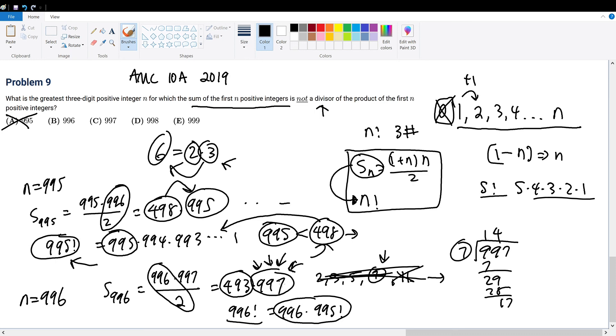So what does that mean? That means that 997 is not part of this multiple from 996 factorial. Therefore, we have a number that cannot be used to compose 996 factorial, meaning that the summation from 1 to 996 won't be a divisor of 996 factorial. And since that is the exact criteria, the summation is not a factor of the multiplication or factorial, then we obviously have a winner right here, B to be 996.